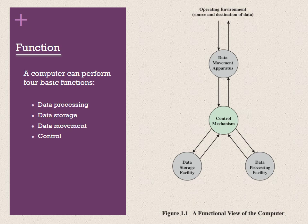This figure depicts the basic functions that a computer can perform. In general, there are only four functions: data processing, data storage, data movement, and in the middle is control, which is calling all the shots. The computer must be able to process data, which may take a wide variety of forms, and the range of processing requirements is broad. However, there are only a few fundamental types of data processing.